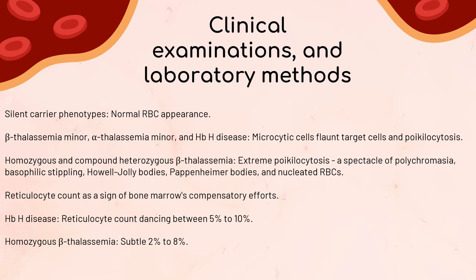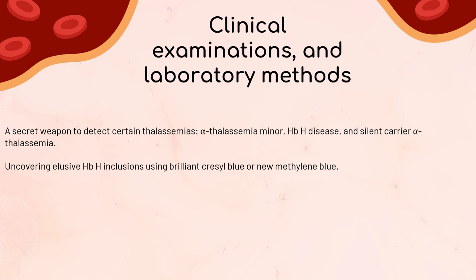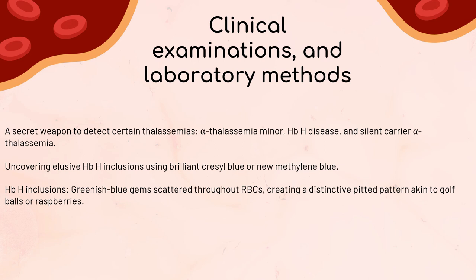The supervital staining technique is a secret weapon to detect alpha-thalassemia minor, hemoglobin H disease, and silent carrier alpha-thalassemia. Using brilliant cresyl blue or new methylene blue, we uncover the elusive hemoglobin H inclusions — appearing like greenish-blue gems scattered throughout RBCs, creating a distinctive pitted pattern akin to golf balls or raspberries. These hemoglobin H inclusions differ from Heinz bodies, which are larger, fewer in number, and usually appear eccentrically along the inner membrane of the RBC.